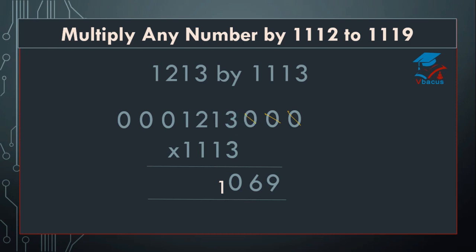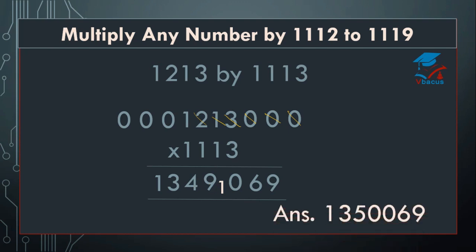Cut 0. Then, 3 ones are 3 plus 2 equals 5, plus 1 equals 6, plus 3 equals 9. Cut 3. 3 zeros are 0 plus 1 equals 1, plus 2 equals 3. Cut 2. 3 zeros are 0 plus 0 plus 0 plus 1 equals 1. So this 1 will be added to 9 — again it will become 10, write 0 here and 1 will be carried over to 4. So your final answer will become 1, 3, 5, 0, 0, 6, 9.